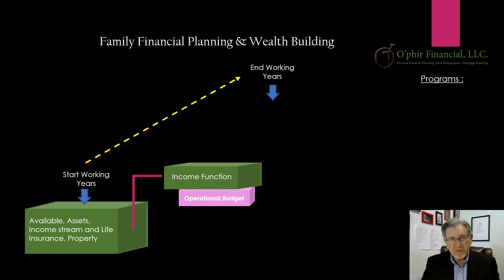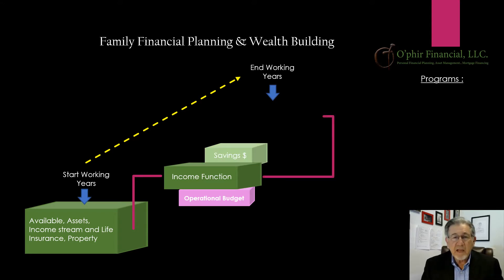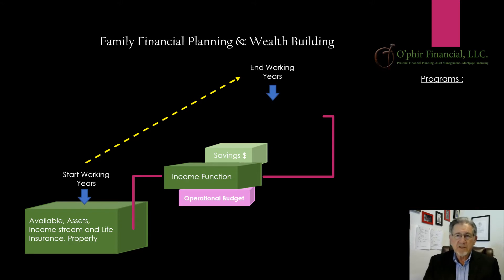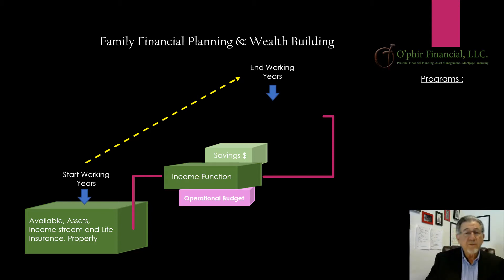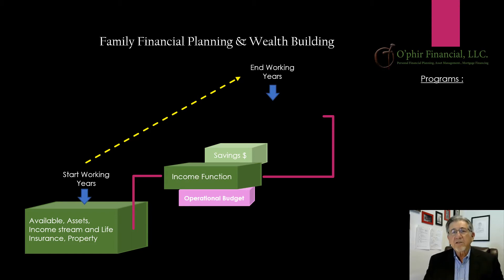Those are things we're going to talk about in this presentation. One of the other key elements to consider is not just your income and operational budget, but what is the remainder — if there is any — for savings. We want to create a savings concept right from the get-go. As we build, we can increase those saving dollars, not excluding the fact that you might want to purchase a larger home. There should be a savings base so that at the end of your working years, you have enough money to actually retire.